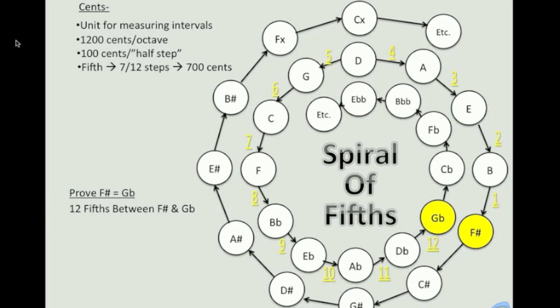Starting with G-flat at 0 cents, and then adding 12 fifths times 700 cents per fifth gives you 8,400 cents. Dropping that note into the original octave by subtracting 6 octaves, or 8,400 cents minus 1,200 cents per octave times 6 octaves gives you 8,400 cents minus 8,400 cents, which comes out to 0 cents. Because 0 cents is a unison, F-sharp is equal to G-flat.